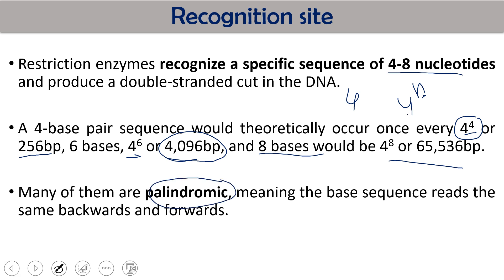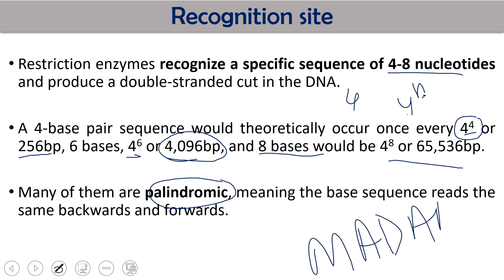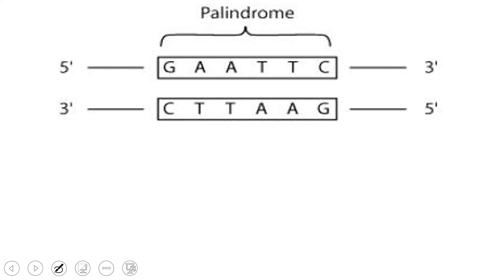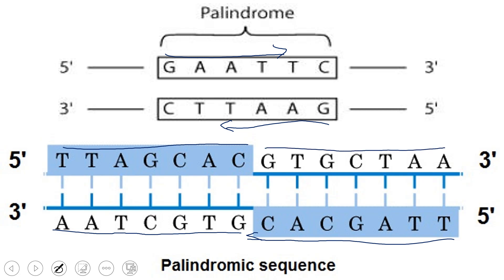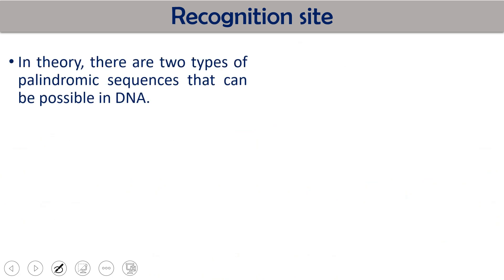Most recognition sites are palindromic in nature. What is palindromic? Like the word 'MADAM' — if you read it from either side it is the same. Any sequence which reads the same from either side is called a palindromic sequence. Most recognition sites of restriction enzymes are palindromic. For example, GAATTC — whether you read it from this side or that side it is GAATTC — so this is a palindromic sequence.